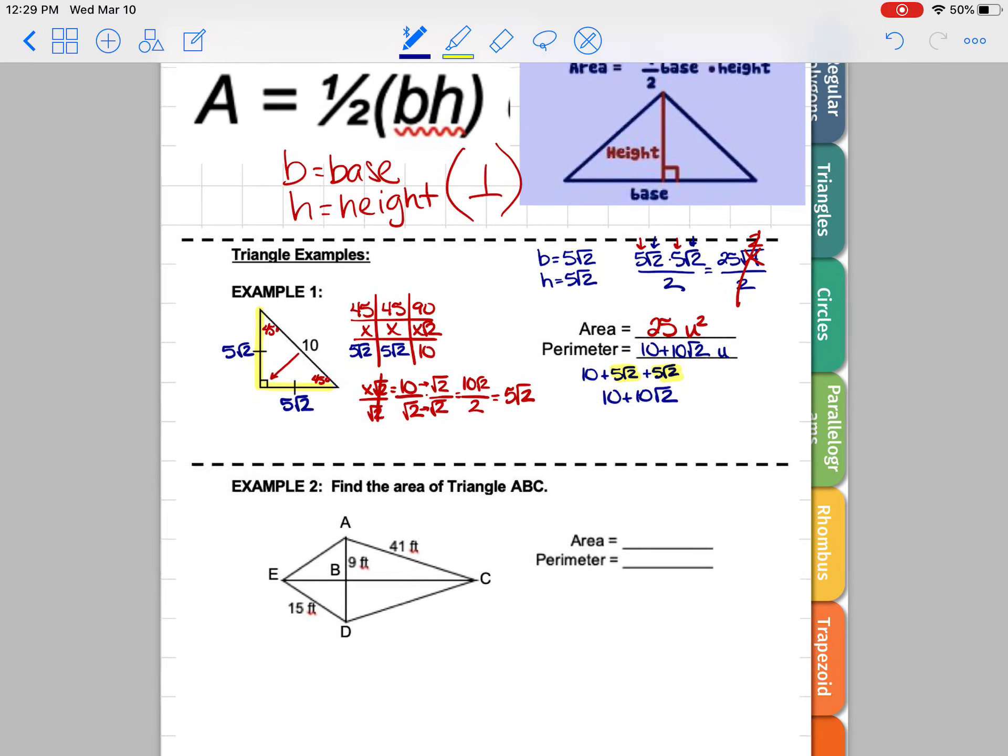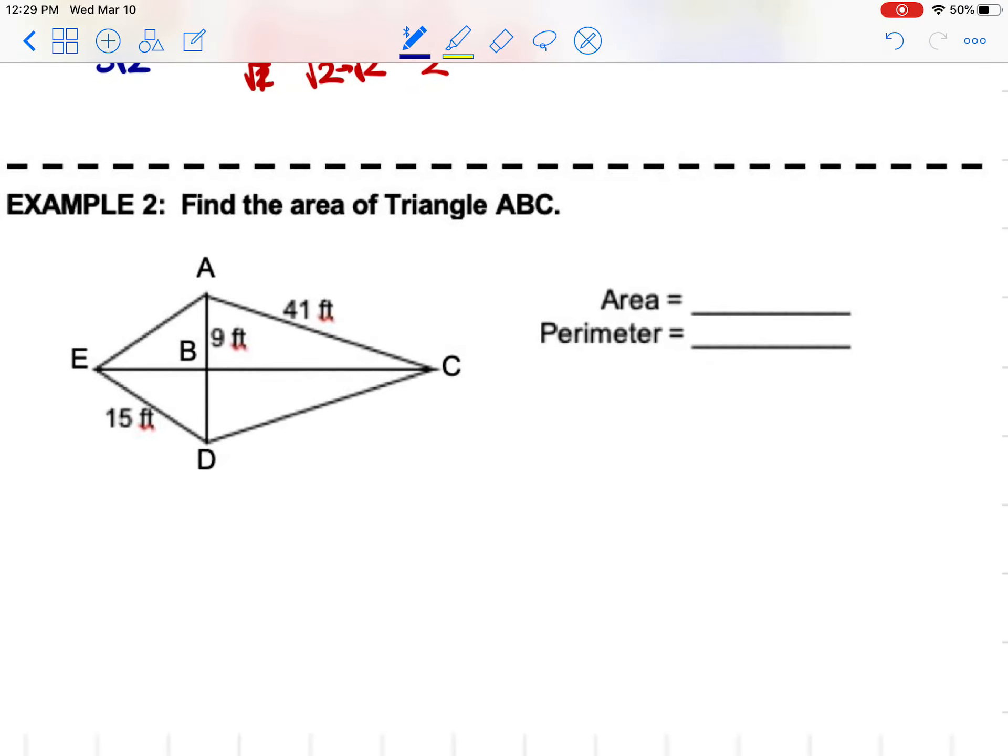Example 2. They want us to find the area of triangle ABC when we start out with the kite. So let's highlight triangle ABC. We're just working with this triangle here. We have the height as 9, so we know that we need base and height. We have the height of 9, but we're missing the base.